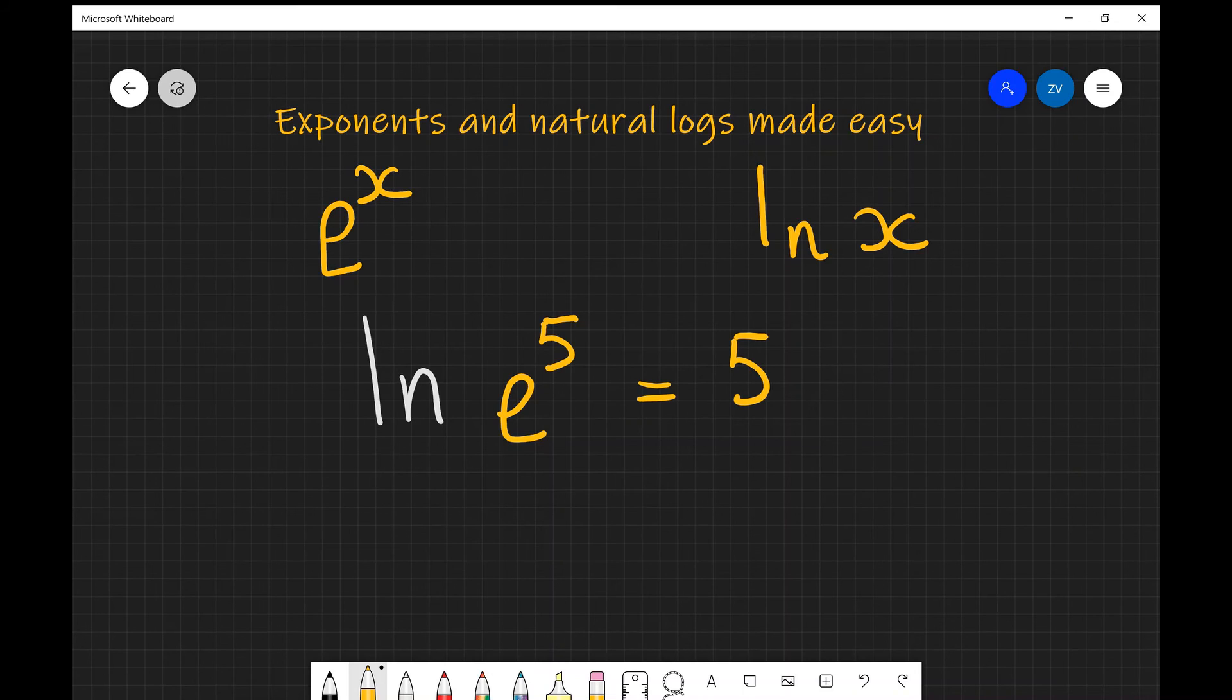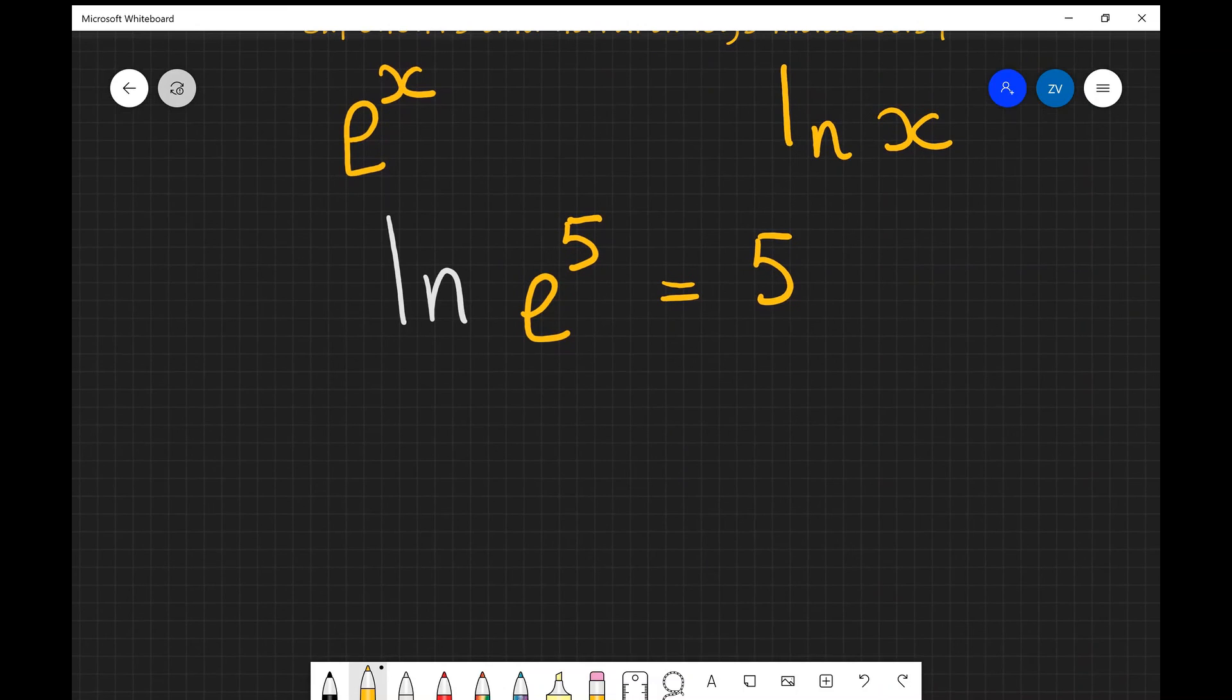It's important to know that this only works if they have the same base. In this case ln is just log base e but it's much easier to remember simply that ln of e to the power of x will always equal x.